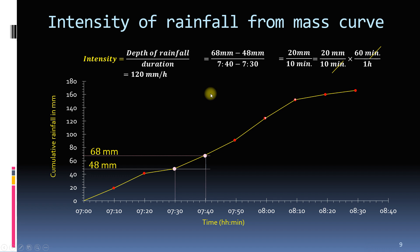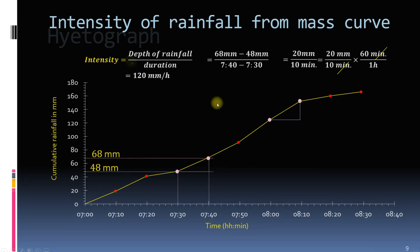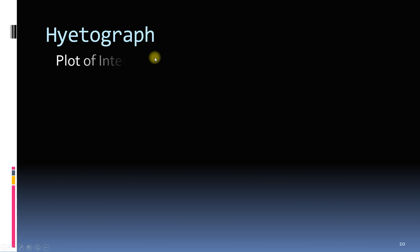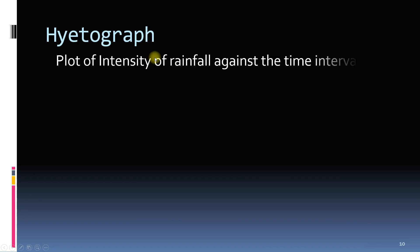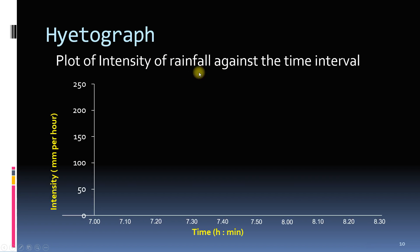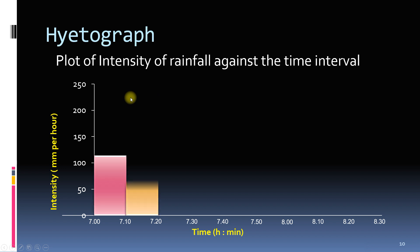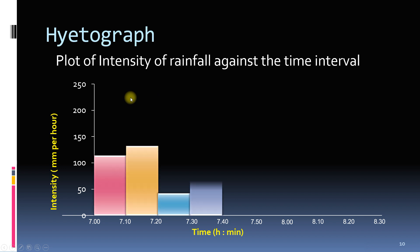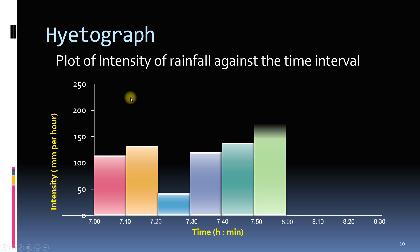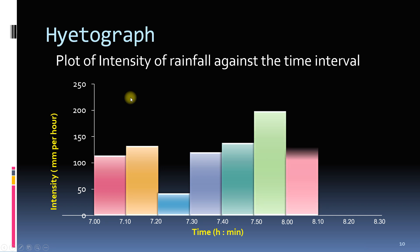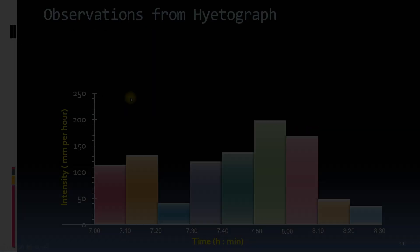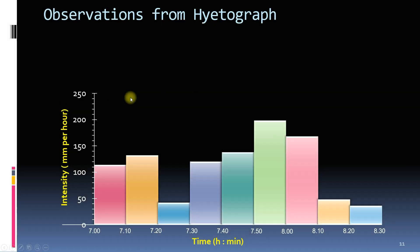Similarly, we can find intensities for multiple pairs of points. When we plot these intensities against the time interval as a bar graph, this plot is called a hydrograph. The word hydrograph is derived from the Greek word 'hytos' which means rain. Once we plot the hydrograph, we can get additional information from it.